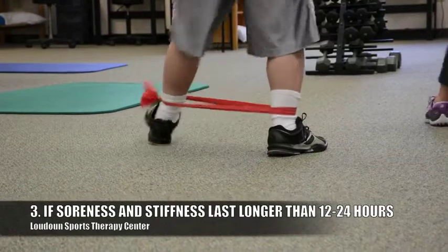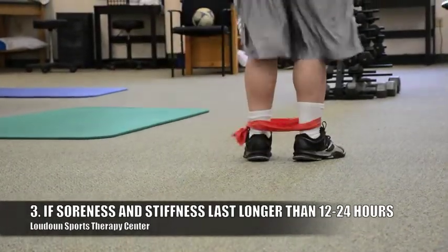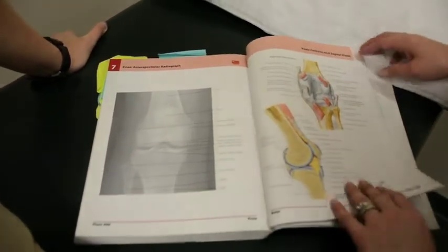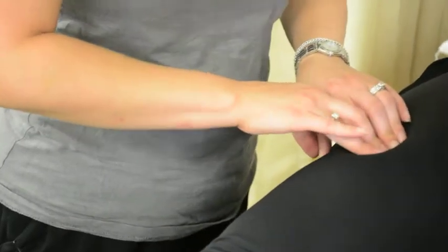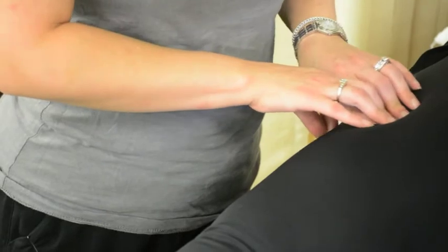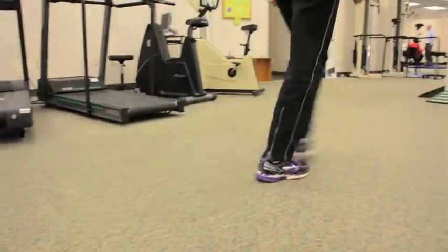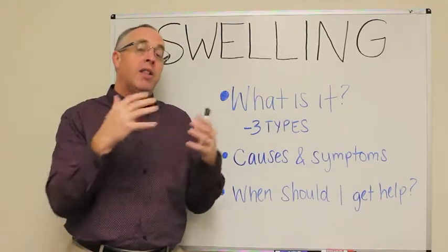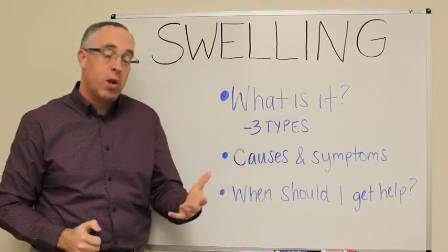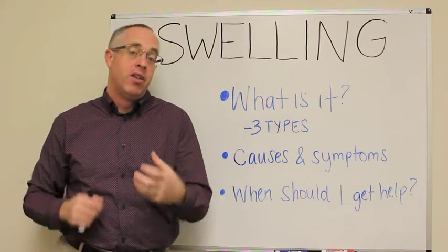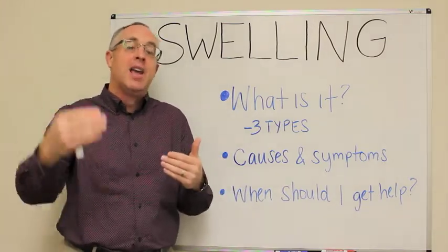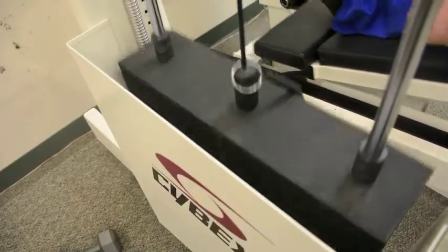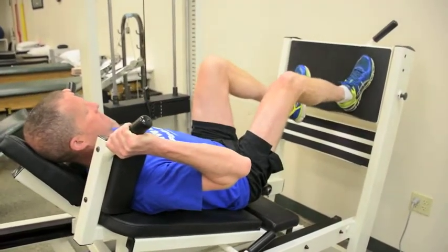Third, be concerned any time the soreness or stiffness lasts more than 12 to 24 hours. Remember: acute inflammation should be gone within 24 hours. Chronic swelling is still there 24 hours later — whether that's the next day, two days, two weeks, or two months later. If that soreness and stiffness is still there to some degree, the swelling hasn't gone away, the body hasn't healed itself, and you're at risk for future injury because the body can't start its next healing phase completely.